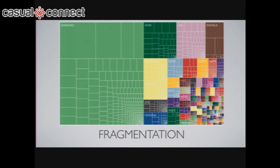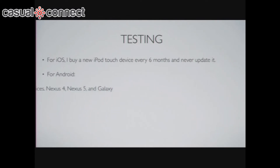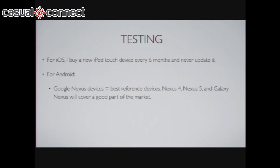So fragmentation — I love this graph. It illustrates Android pretty well. Big half of this is Samsung and the rest is everything else in the entire Android market. The S2 is up in the corner, the S3 next to it — that's the landscape, and it scares the death out of most people coming to Android. But it's not really that bad. For iOS, my strategy is: every six months I buy a brand new iPod touch, the lowest cheapest one, and never upgrade it — so I'm covered on iOS. For Android, the Google Nexus device is the best reference device. A Nexus 4, Nexus 5, and Galaxy Nexus will cover the vast majority of the market, and each has a different chipset for OpenGL.